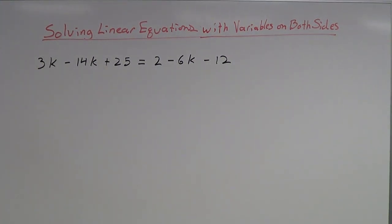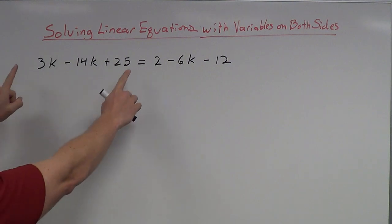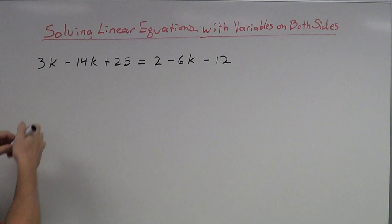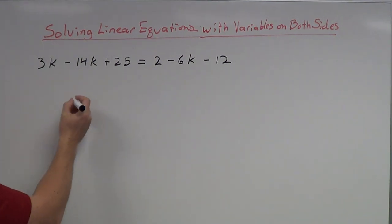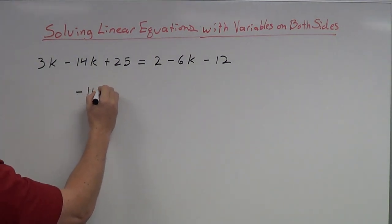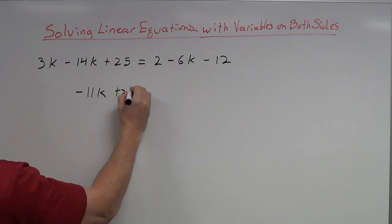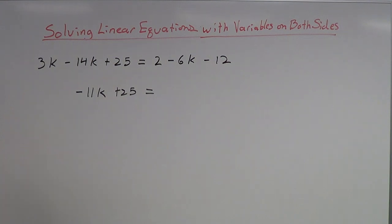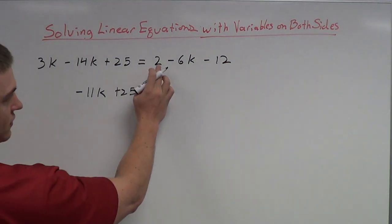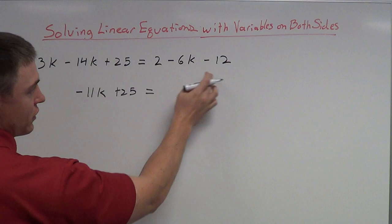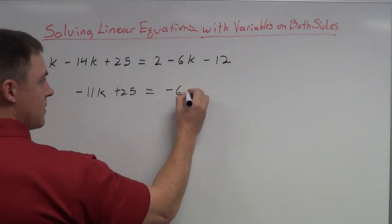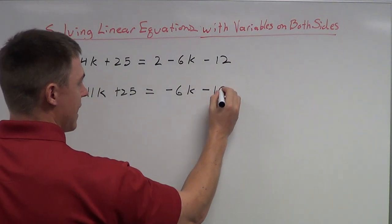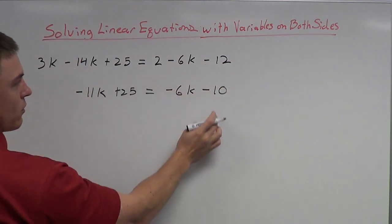What I want to do is gather everything together. First, on the left side, I'm going to combine everything that is alike. There are two k terms here — I'm going to add those together to get negative 11k plus 25. Then on the right side, I notice a 2 and a negative 12, both constant terms, so it's going to be negative 6k and then negative 10. Positive 2 and negative 12 make negative 10.